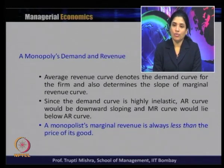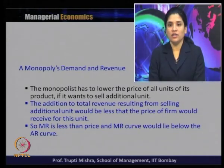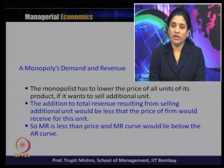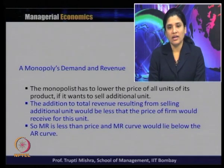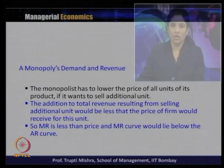The monopolist's marginal revenue is always less than the price of its goods, because the monopoly has to lower the price of all units if it wants to sell an additional unit. The addition to total revenue from selling an additional unit is less than the price received for that unit. So MR is less than price and the MR curve lies below the average revenue curve.